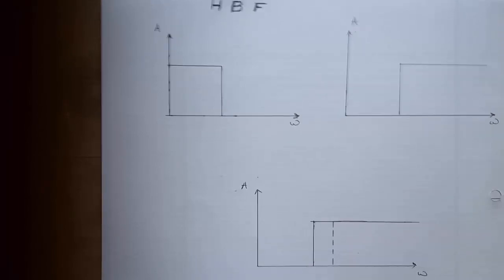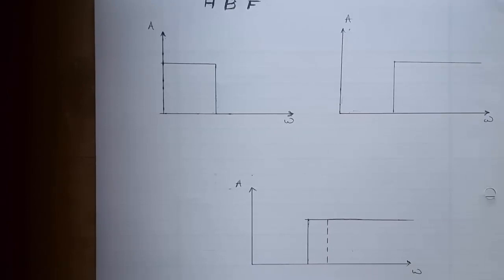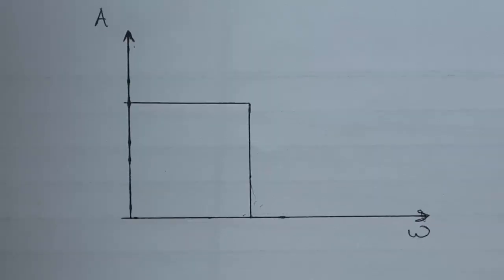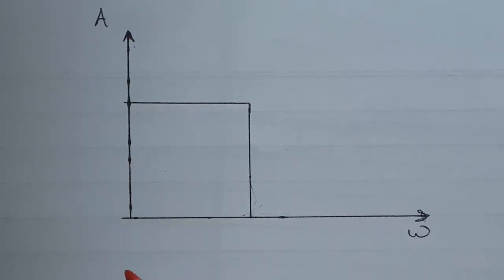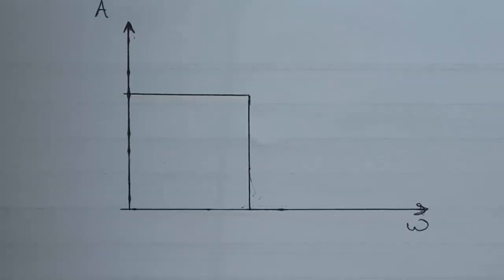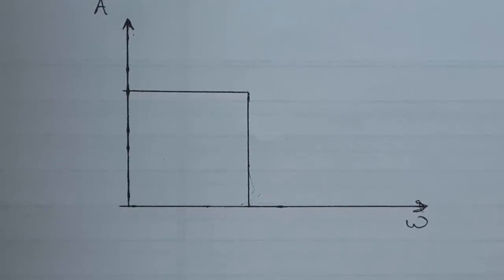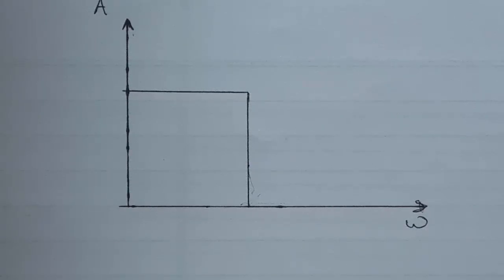I have drawn three graphs to explain what exactly a high boost filter is. In graph number one, the x-axis (horizontal axis) denotes the frequencies, represented by omega, and the y-axis represents the intensity values. This is similar to how we draw a response graph for filters in analog design, as learned in subjects like DLIC or other analog subjects.